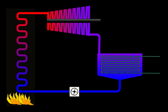While many substances could be used as the working fluid in the Rankine cycle, water is usually the fluid of choice due to its favorable properties, such as its non-toxic and unreactive chemistry, abundance, and low cost, as well as its thermodynamic properties.